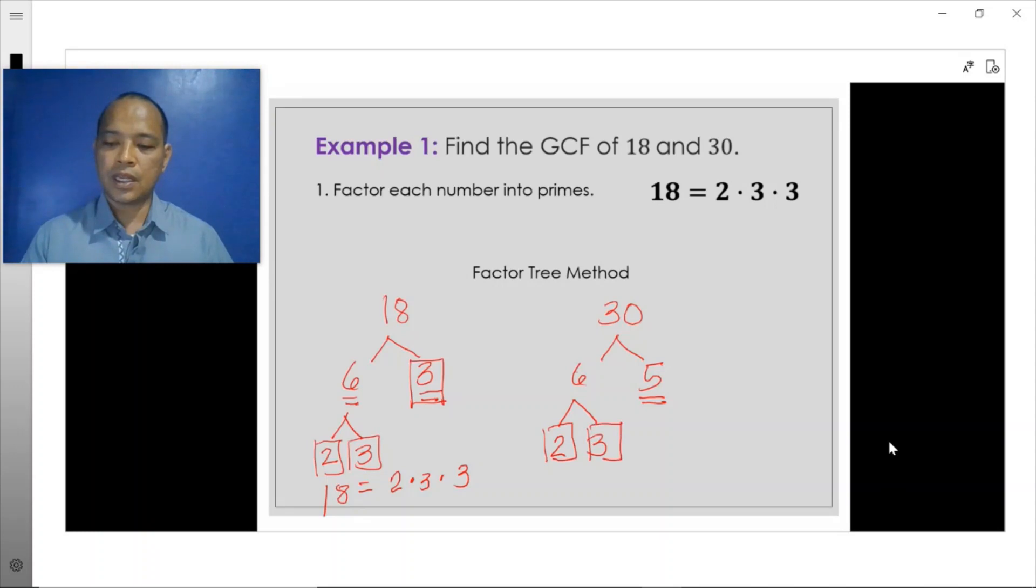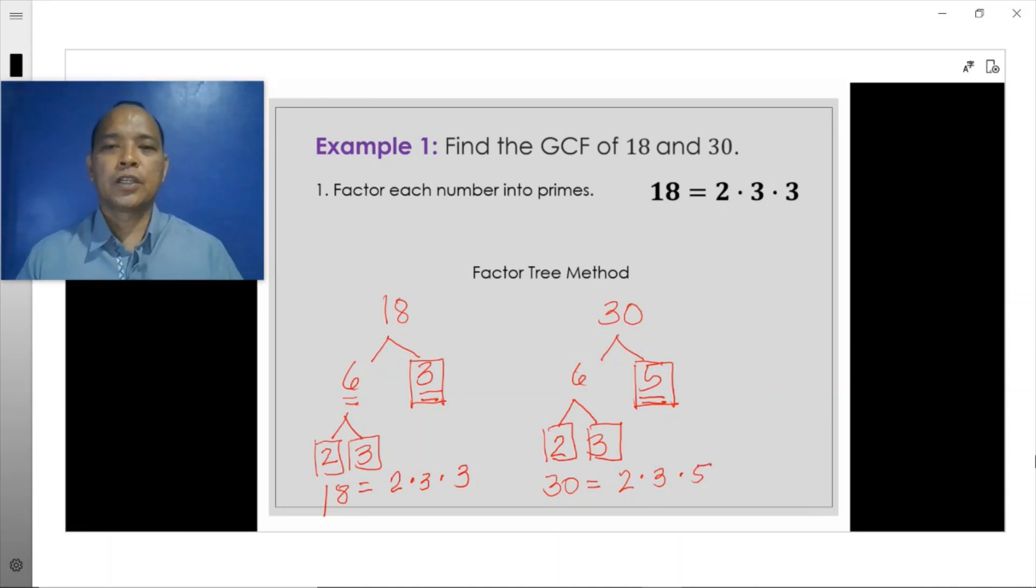2, 3, and 5, are all prime numbers, then we stop decomposing these numbers. Therefore, 30 is actually equal to 2 times 3 times 5. Therefore, the prime factorization form, 30 is 2 times 3 times 5.